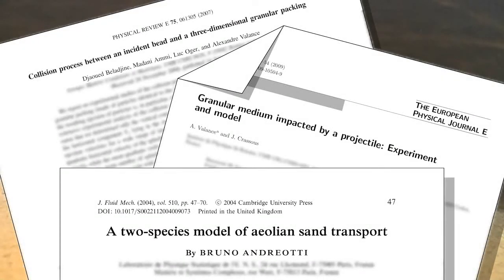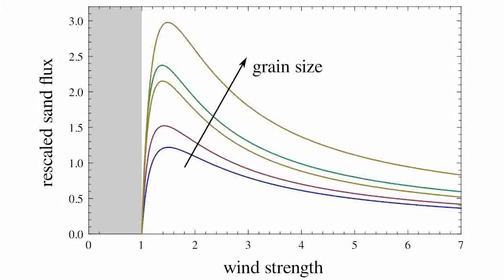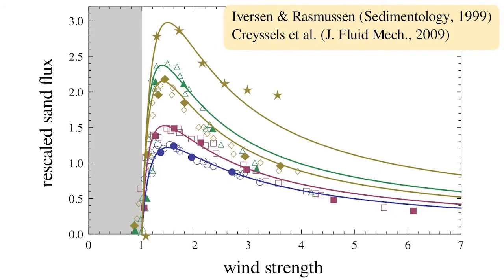But these important pieces of evidence had never been put together into an analytically tractable and numerically efficient first principles model of aeolian sand transport. As a main result of the present work, the sand flux can now reliably and accurately be predicted as a function of the wind strength and grain size. The numerical solutions of the two species model are found to be in remarkable agreement with recent data from wind tunnel measurements performed by researchers in Aarhus, Denmark.